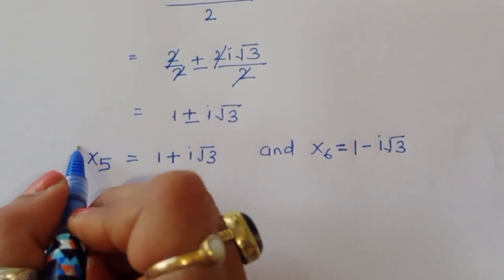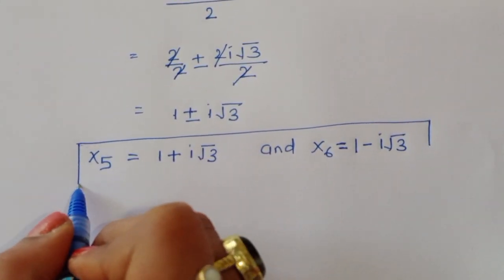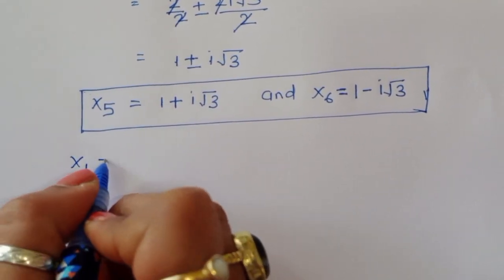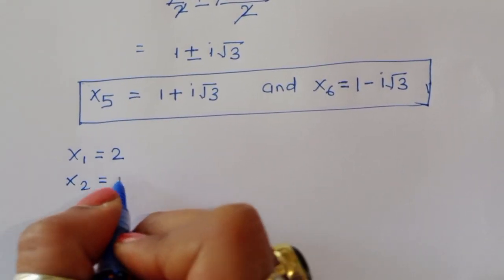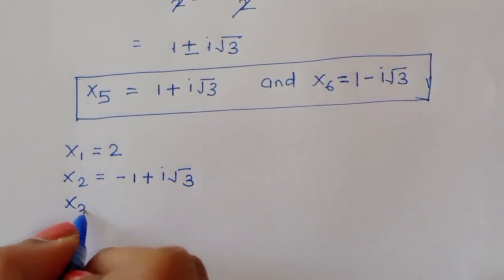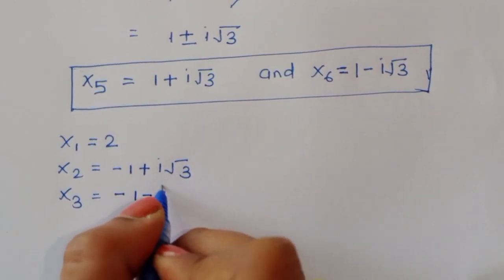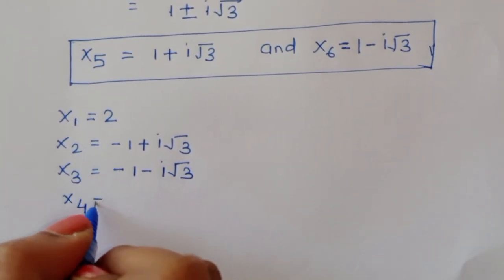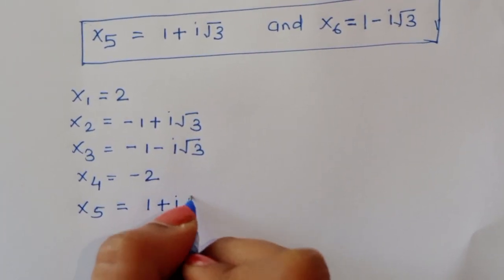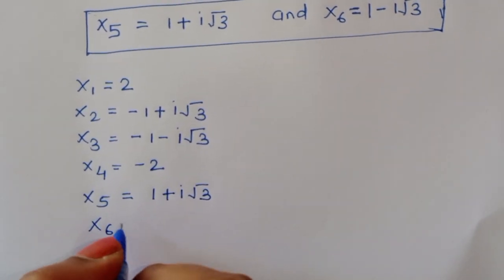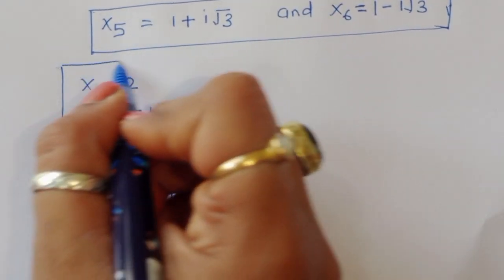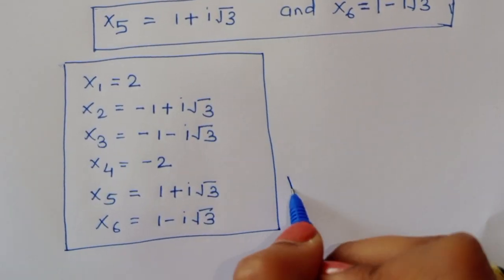In total we got 6 values of x. x₁ equals 2, x₂ equals minus 1 plus i root 3, x₃ equals minus 1 minus i root 3, x₄ equals minus 2, x₅ equals 1 plus i root 3, and x₆ equals 1 minus i root 3. These are the values of x, and this is the solution. Thank you.